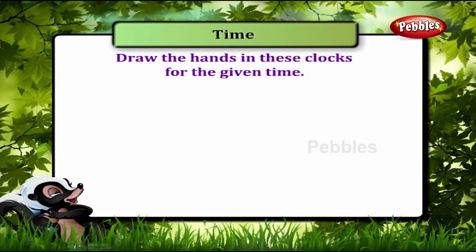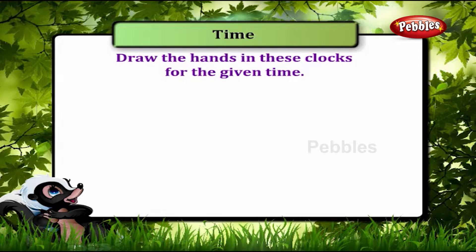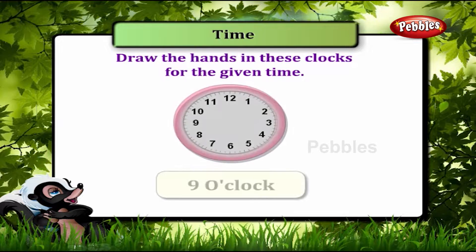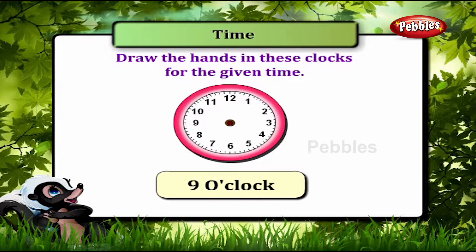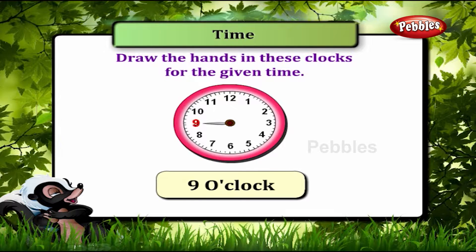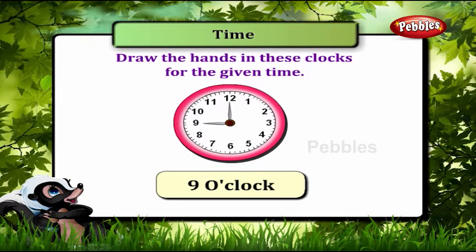Draw the hands in these clocks for the given time. 9 o'clock: the short hand will point to 9 and the long hand will point to 12.